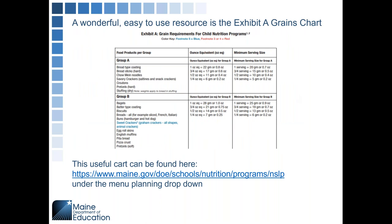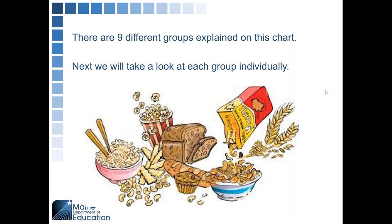A wonderful, easy-to-use resource is the Exhibit A Grains Chart. This useful chart can be found at the provided link, and if you are on our page it's under the menu planning drop-down. There are nine different groups explained on this chart, and next we will take a look at how each group credits individually.